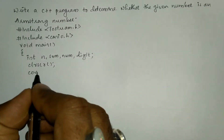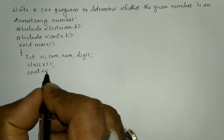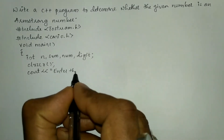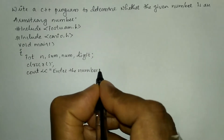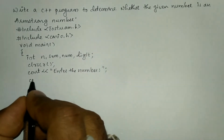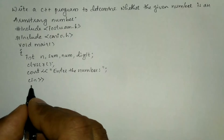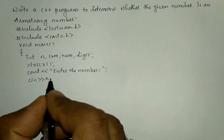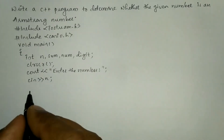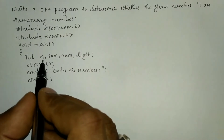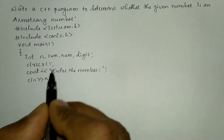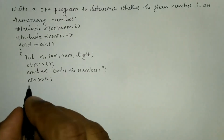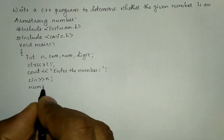Now I'll ask the user to enter the number using cout with the stream insertion operator in double quotation marks and put a semicolon. Then I receive the response from the user via keyboard using cin with the stream extraction operator into variable n. Now I'm going to keep the original number intact by saving it in one more variable called num: num = n.